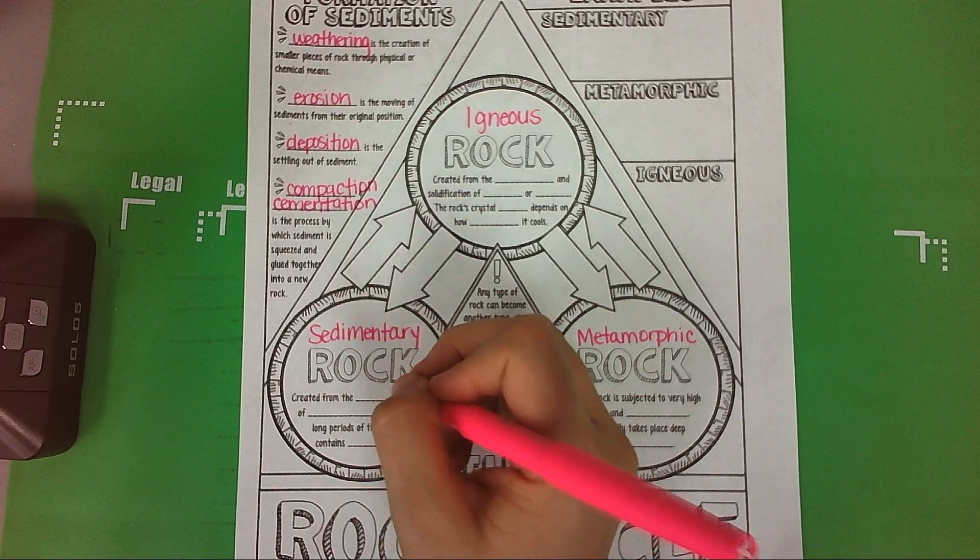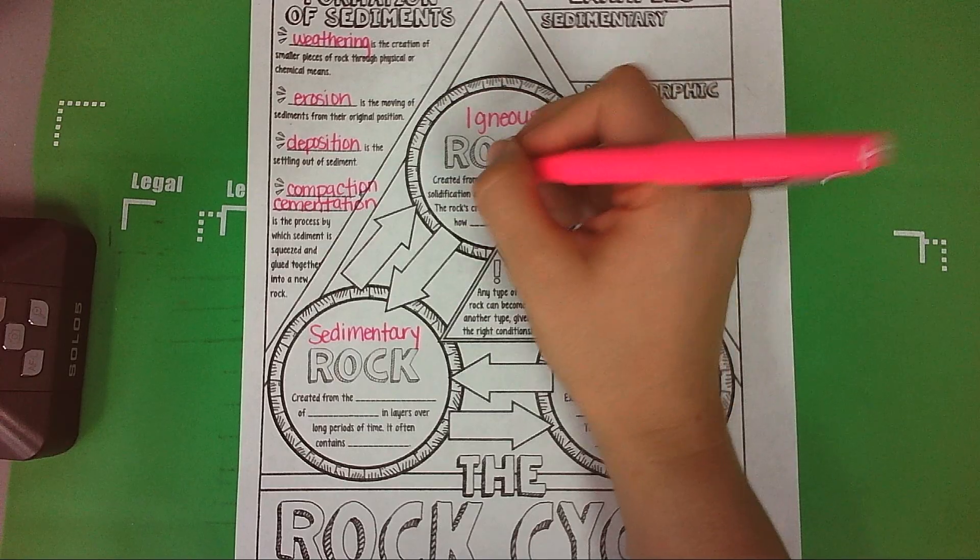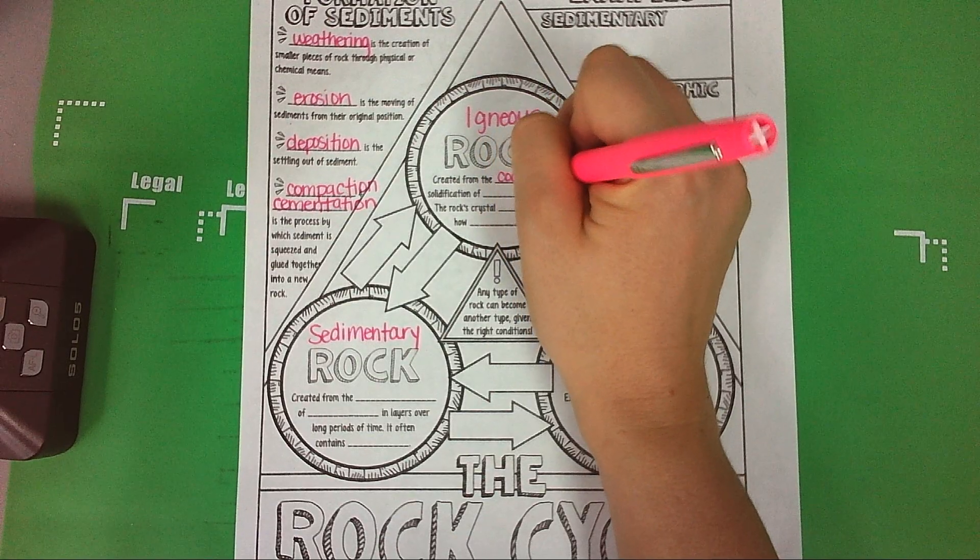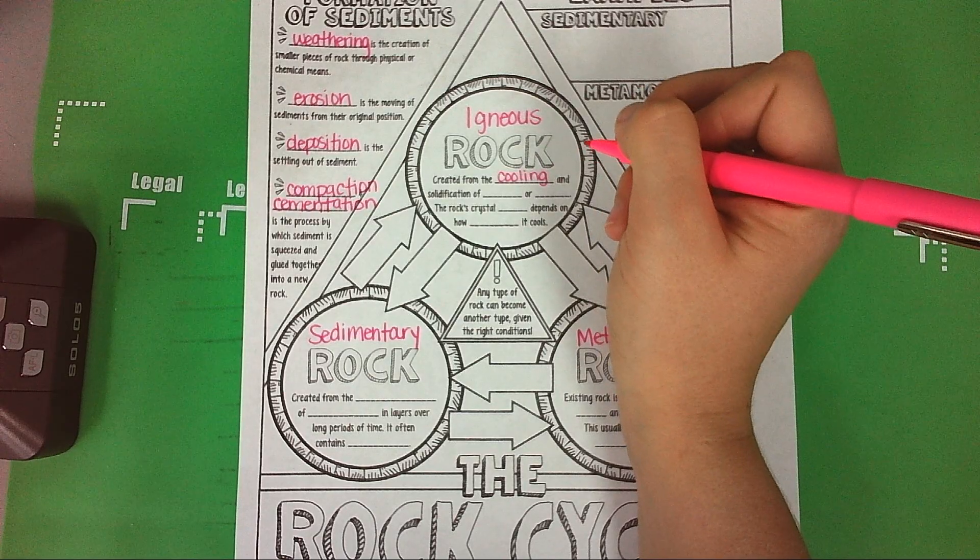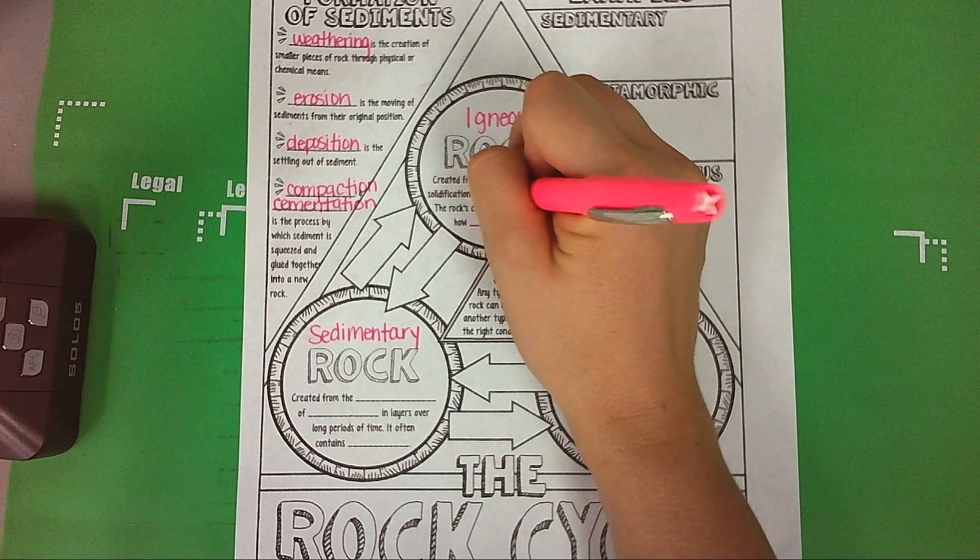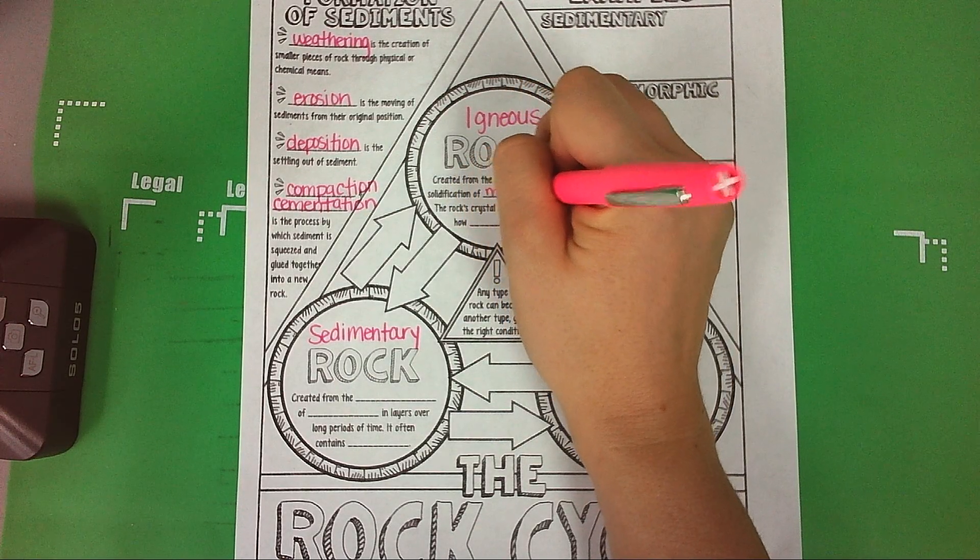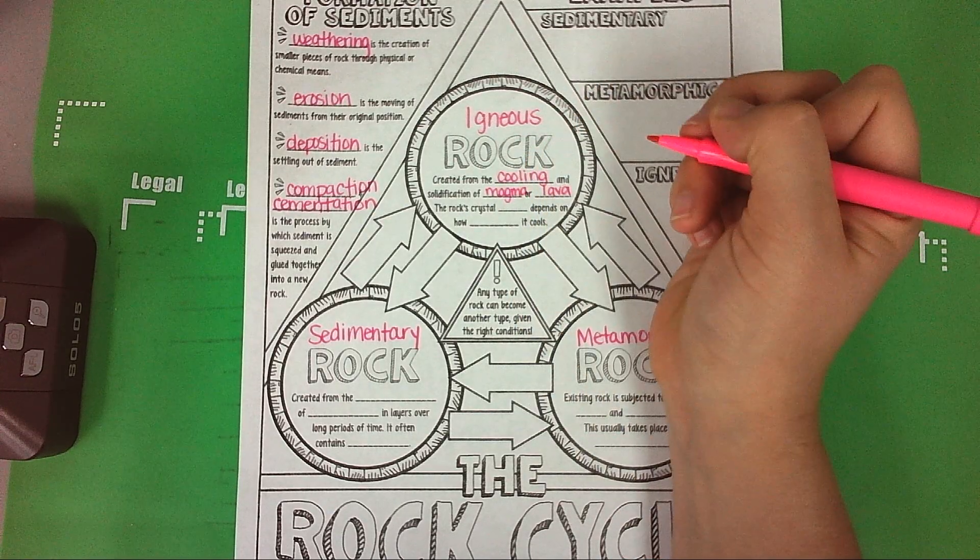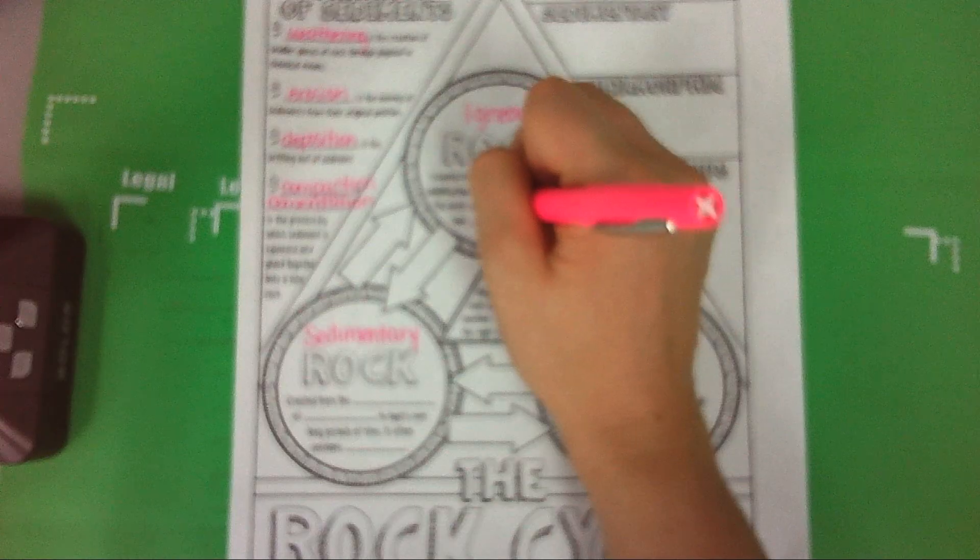Let's start with igneous rock. Igneous rock is created from the cooling and solidification of magma or lava. The rock's crystal size...